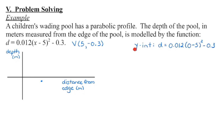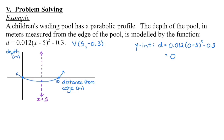A y-intercept occurs when x is equal to 0, so I can substitute 0 in for x and enter this into the calculator to get the y-intercept — which gives us a y-intercept at 0. The vertex lies on the axis of symmetry, a vertical line passing through x equals 5. The parabola is symmetrical about that axis, so if one x-intercept is 5 units to the left, the other x-intercept is 5 units to the right — giving us another x-intercept at 10.